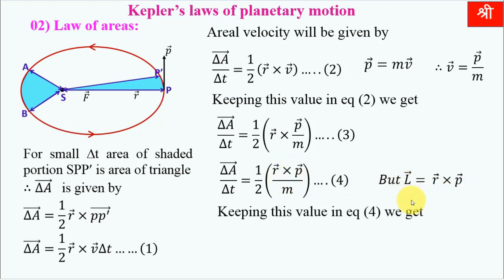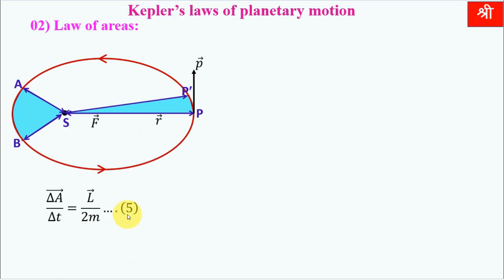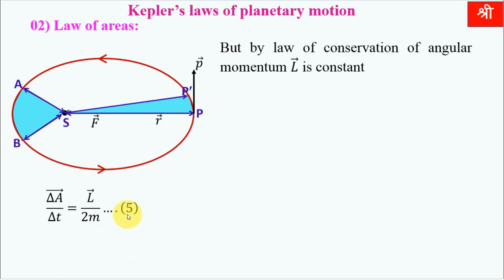From this we get the equation: delta A upon delta T equals vector L upon 2M. This is equation number 5 and that is the proof of the second law. By the law of conservation of angular momentum, when there is no torque acting on a body, vector L is constant.